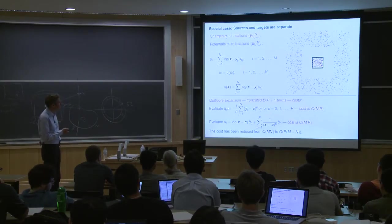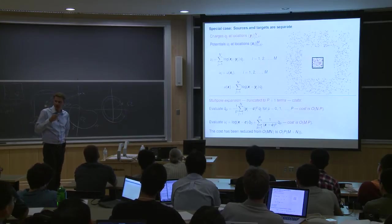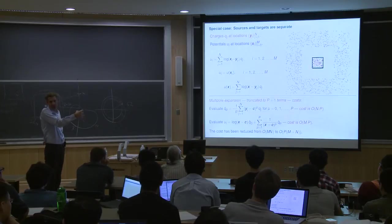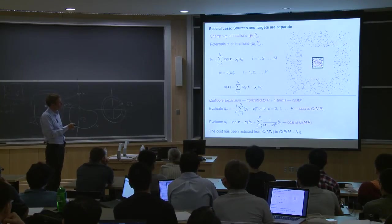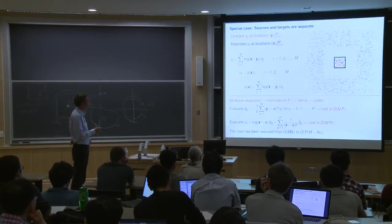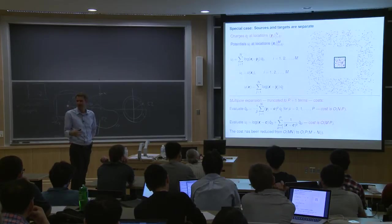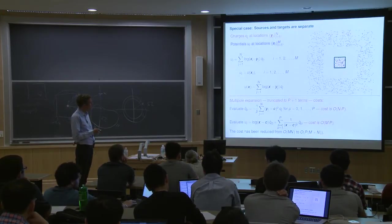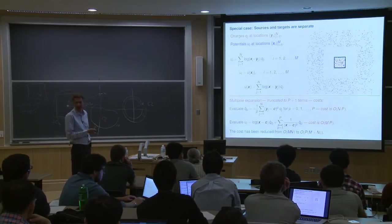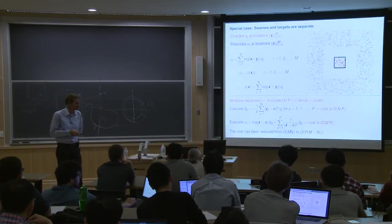What are the costs? You need to evaluate the multipole moments — the Q-hat_p. Each source contributes to p+1 expansion coefficients, so this cost is O(mp). Then once you have all the expansion coefficients, evaluating the potential at a given target point x costs O(p) per target, giving O(np) total. The key point is that we've gone from multiplicative cost O(mn) to O(p(m+n)). This is nice, but this is classical separation of variables — it's been known for a very long time.